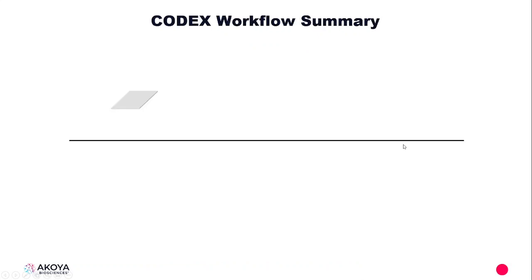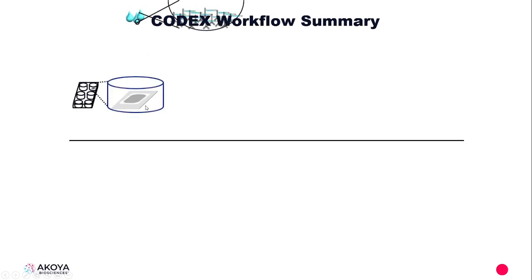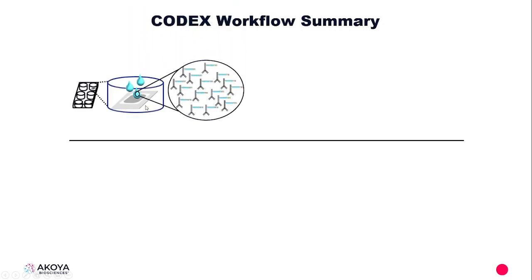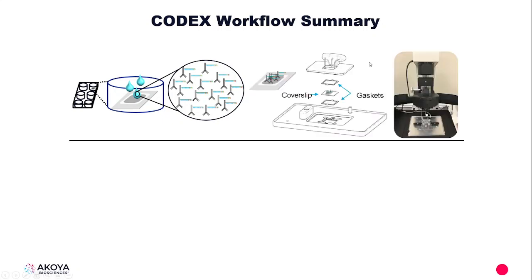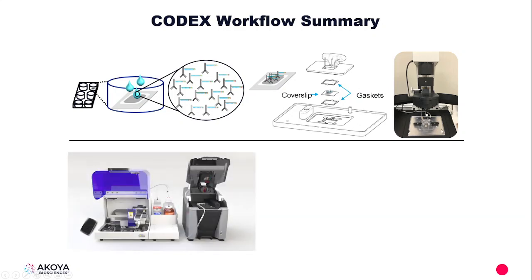To reiterate the workflow: we first section a tissue onto a cover slip, incubate with a cocktail of primary DNA barcoded antibodies, then sandwich that cover slip and tissue between two gaskets with the Codex insert and put that on a microscope stage.